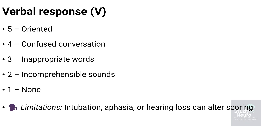The second domain is verbal response, which assesses the patient's ability to speak and interact appropriately, reflecting cortical integration and brain stem function. A score of five indicates the patient is oriented and converses normally; four is given for confused conversation when the patient can speak but is disoriented; three is assigned for inappropriate words or random, unrelated speech; two is used when the patient makes incomprehensible sounds such as moaning or groaning; and one is given when there is no verbal response at all. Verbal scoring can be limited in patients who are intubated, aphasic, or have hearing impairment, as these factors may alter or prevent accurate assessment.